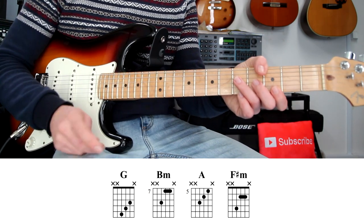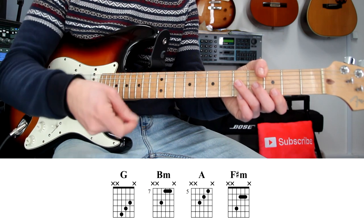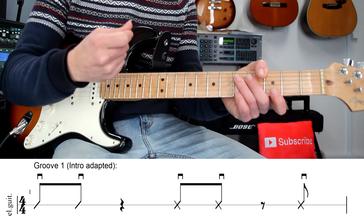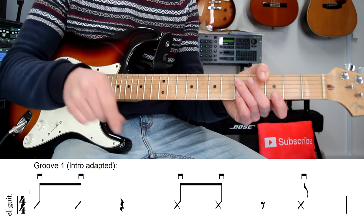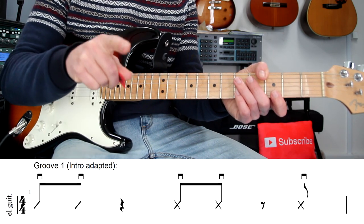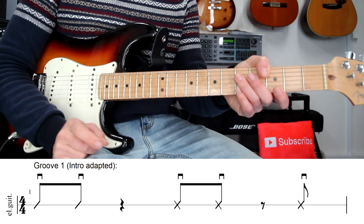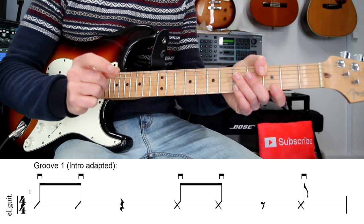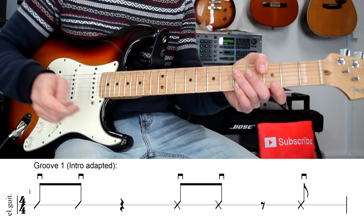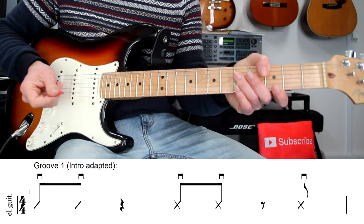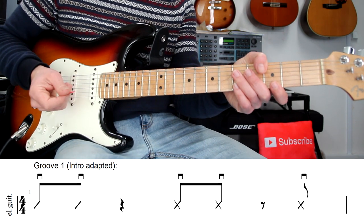So follow the tab. Don't forget that the table means to pick down, strum down, and the V means an upstroke. So table, it's a downstroke, and V, that signal, it's an upstroke. So the first groove, it's pretty simple, just downstrokes. Let me simplify and try to play along with me.